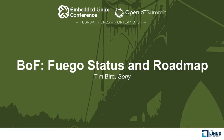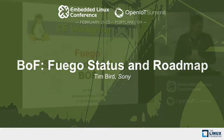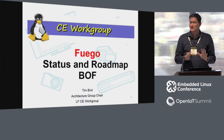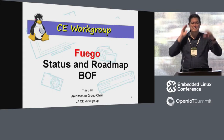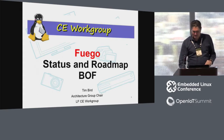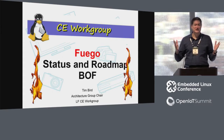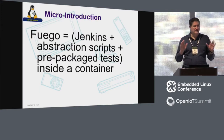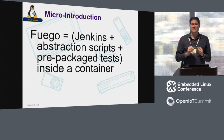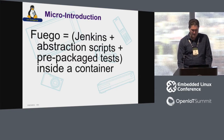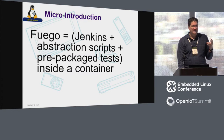This is the Fuego Status and Roadmap BOF. I'm going to go kind of quick here, and if you're not familiar with Fuego, a lot of this stuff might fly past too quick to understand. I have the obligatory flames, but I'm going to give a little micro introduction to Fuego in case you're not familiar with it, and then we'll jump into the BOF. I want to leave plenty of time for discussion at the end. Fuego is Jenkins plus some abstraction scripts to do host-target test stuff.